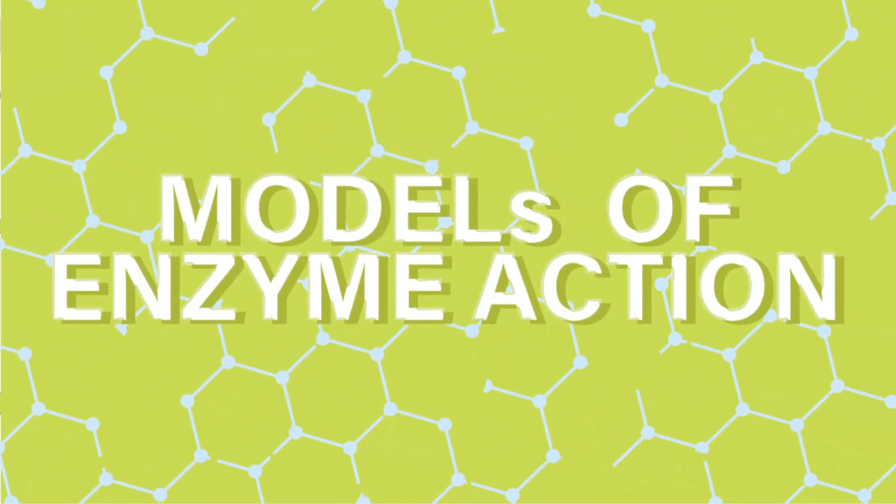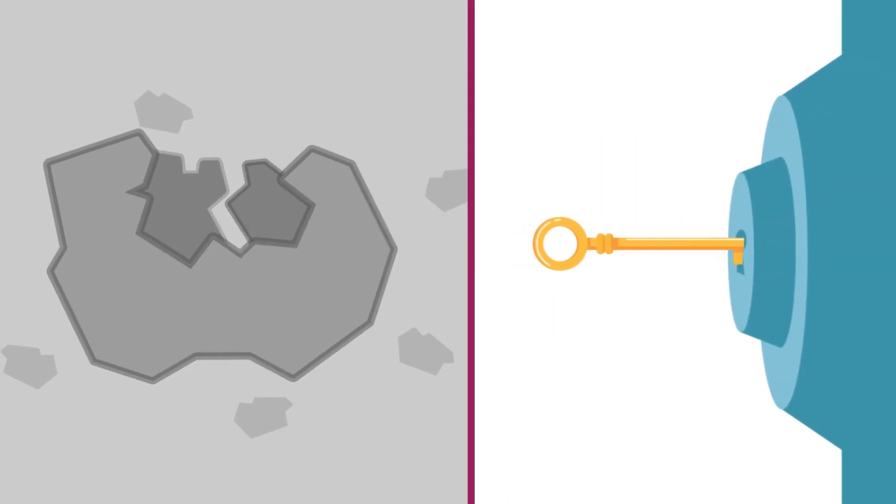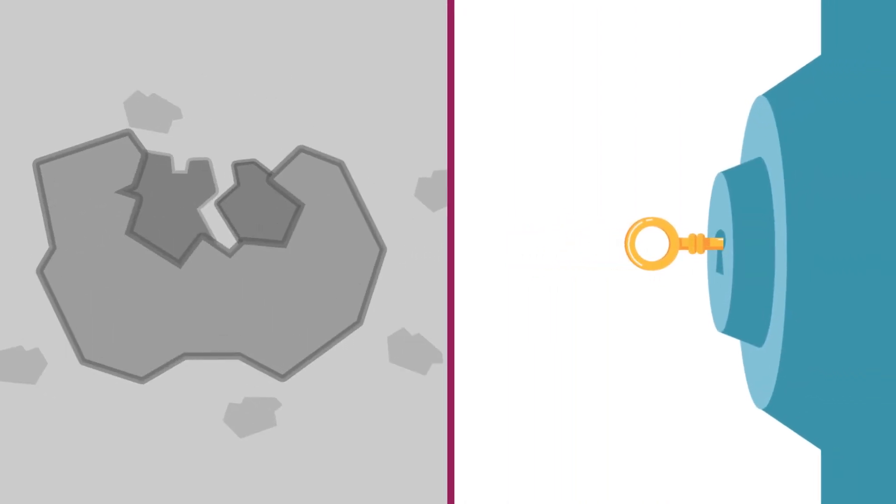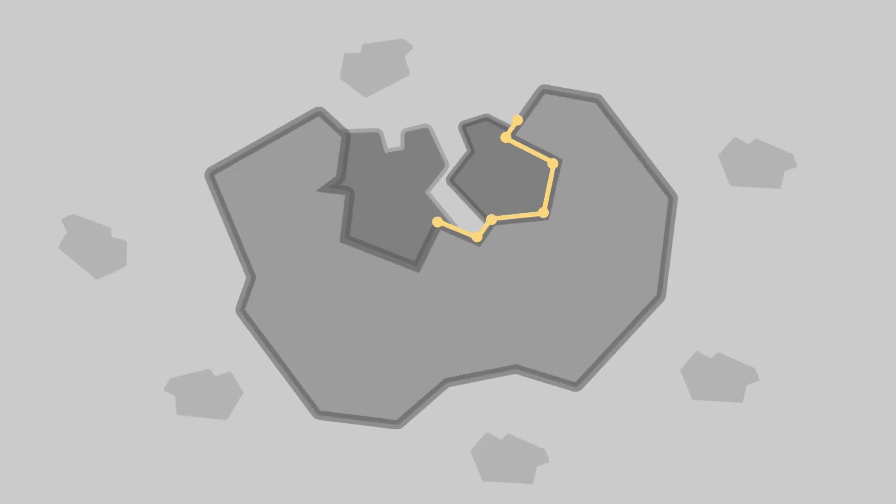Models of enzyme action. Lock and key hypothesis: This is the simplest model to represent how an enzyme works. The substrate simply fits into the active site to form a reaction intermediate, just like a key fits in its specific lock. The shape isn't changed here. Rather, the structure of the substrate absolutely complements the structure of the enzyme, like puzzle pieces.